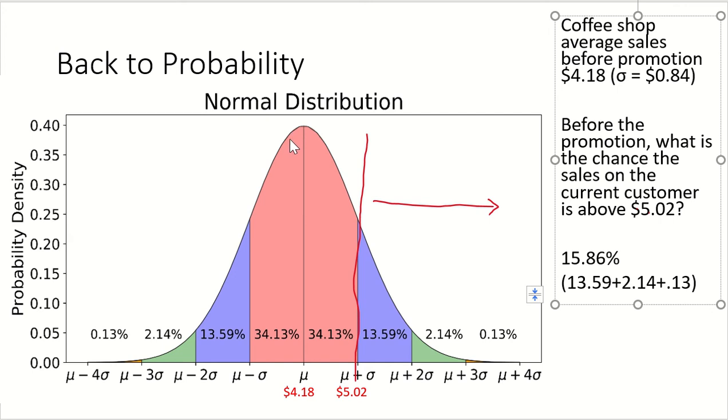Back to the main point. The main point is, in the past, my average is $4.18. However, everybody that walks in is not buying $4.18. Correct? 50% are buying less than $4.18. 50% are buying more than $4.18.